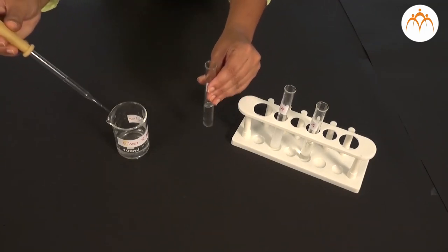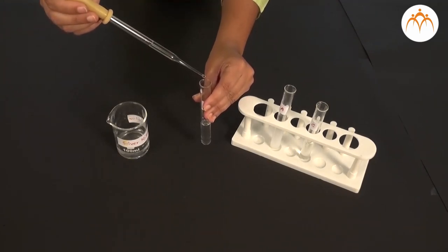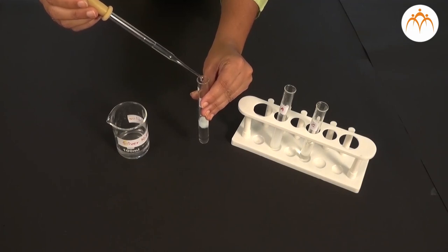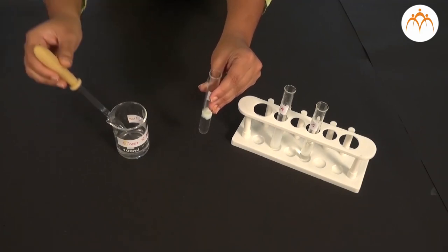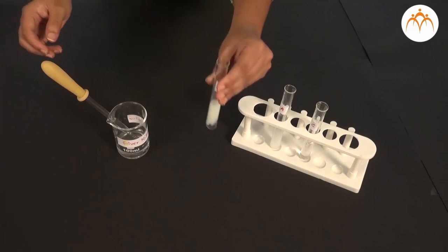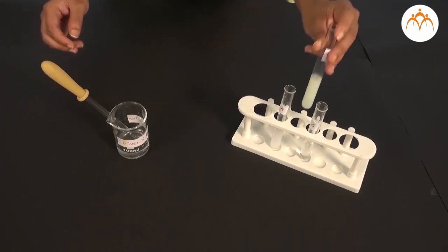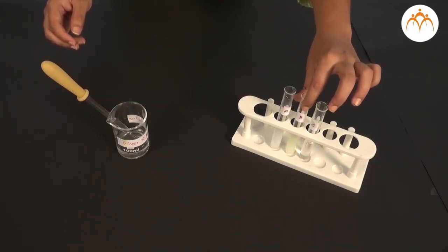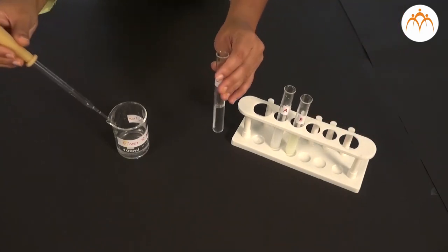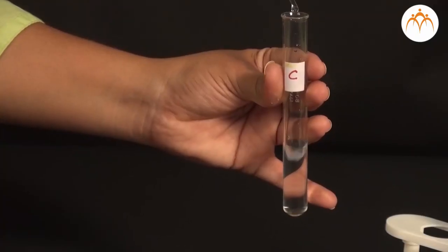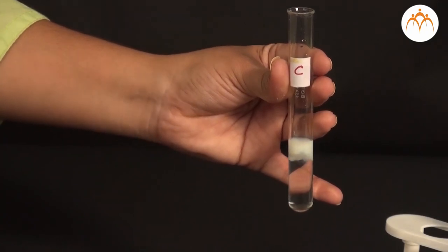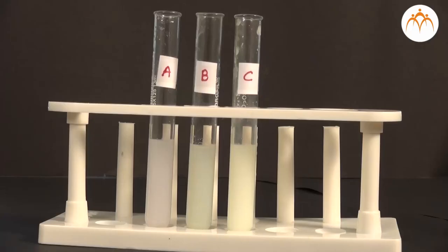In all three test tubes, you will find precipitates. It means that when silver nitrate reacts with these three compounds or solutions, precipitate is formed. This indicates that there is a possibility that there may be halides or compounds of halogen in these three solutions. These halides are giving us precipitates.